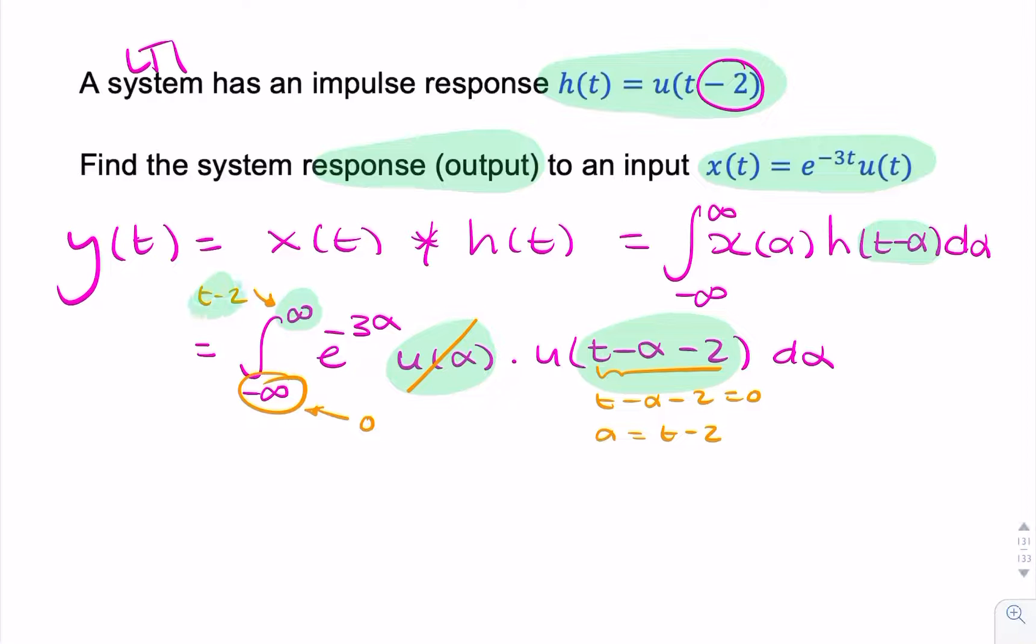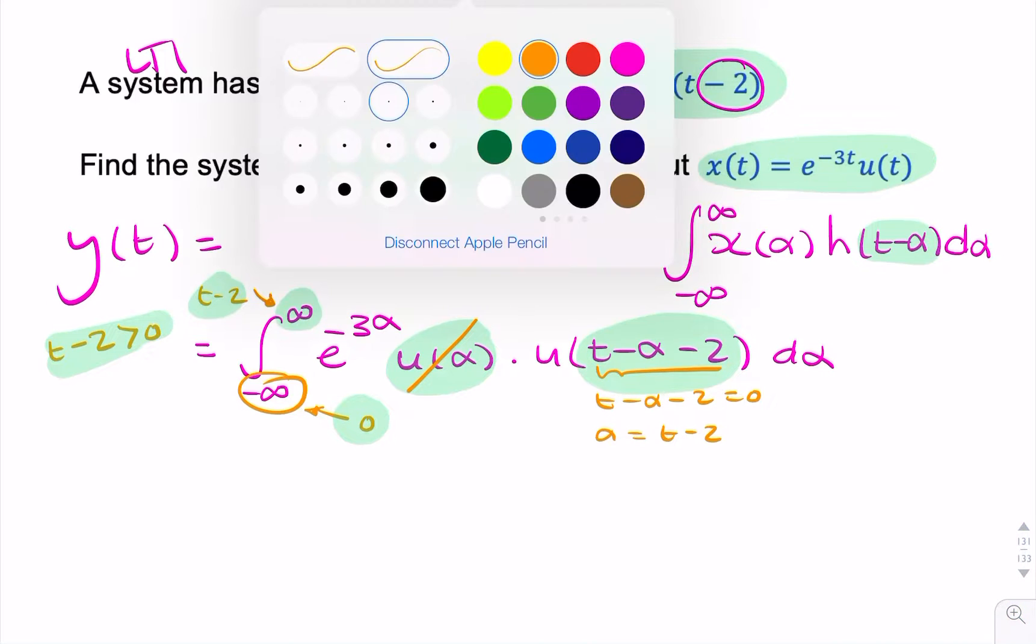But whenever we do that, we need to remind ourselves that t minus 2 has to be greater than 0. So if we have these two limits, 0 and t minus 2, t minus 2 has to be greater than 0. So let's tidy this up a little bit.